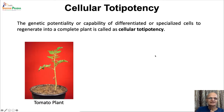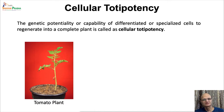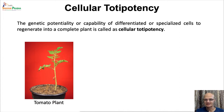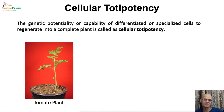As cells divide and gain specialized forms, animal cells usually lose the potential to grow into a new organism. However, in plant cells, all living cells retain this capability to revert back to the meristematic stage on exposure to favorable environmental conditions. It is very important to note that though this capability exists, induction conditions are required to induce these cells to regenerate into complete plants.